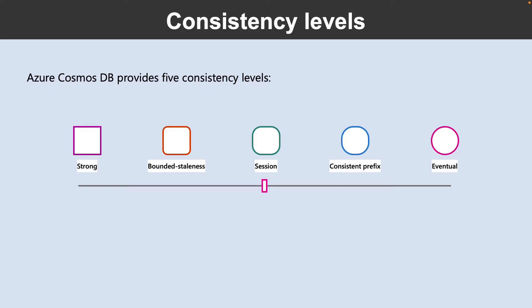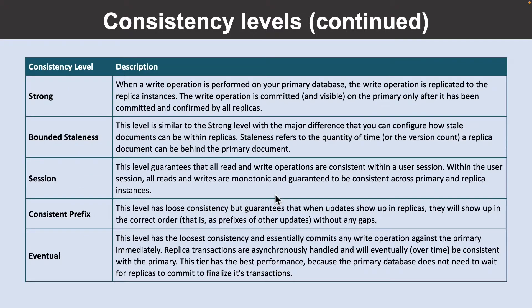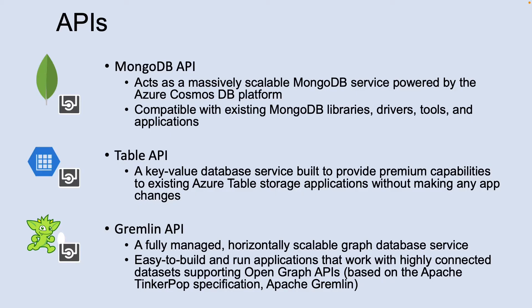Azure Cosmos DB provides five consistency levels: strong, bounded staleness, session, consistent prefix, and eventual. The consistency levels range from very strong consistency — where reads are guaranteed to be visible across replicas before a write is fully committed across all replicas — to eventual consistency, where writes are readable immediately and replicas are eventually consistent with the primary.